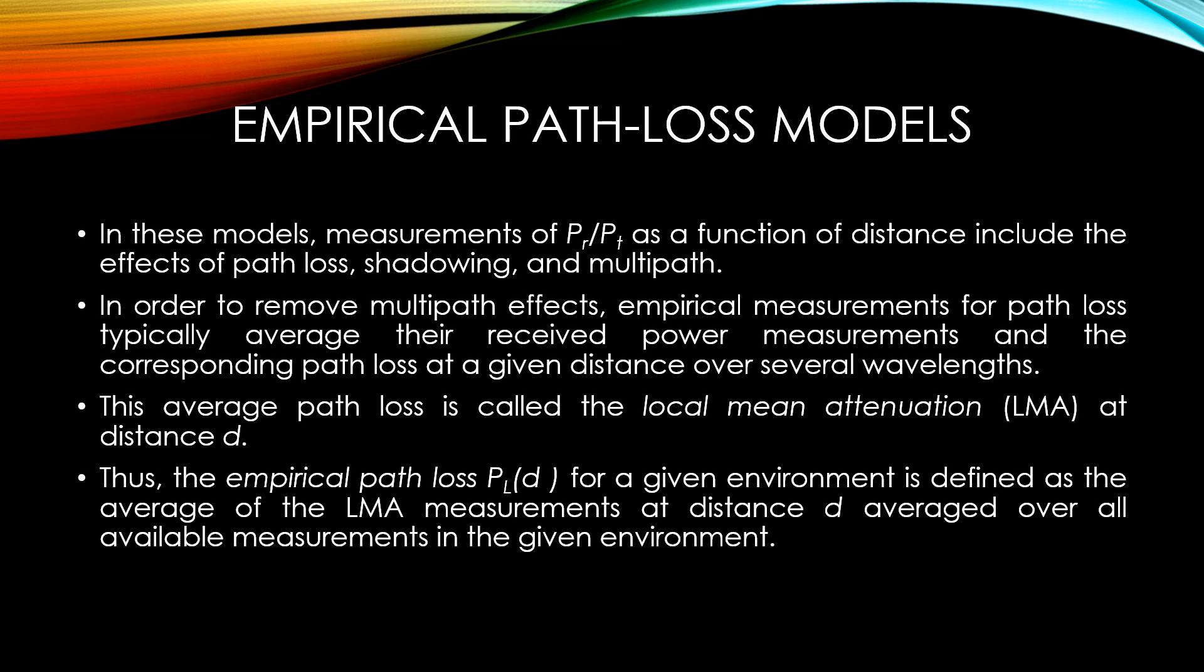In these models, measurements of PR upon PT as a function of distance include the effect of path loss, shadowing, and multipath. In order to remove the multipath effects, the empirical measurements for path loss typically average their received power measurements and the corresponding path loss at a given distance over several regions. This average path loss is called the local mean attenuation at distance d. Thus, the empirical path loss for a given environment is defined as the average of the LMA measurements at a distance d, averaged over all available measurements in a given environment.